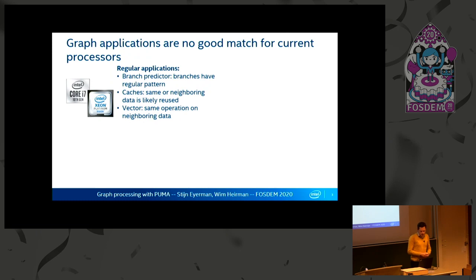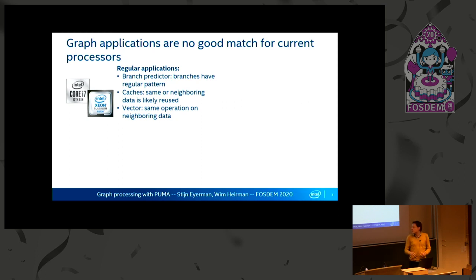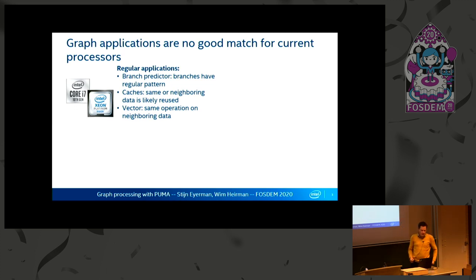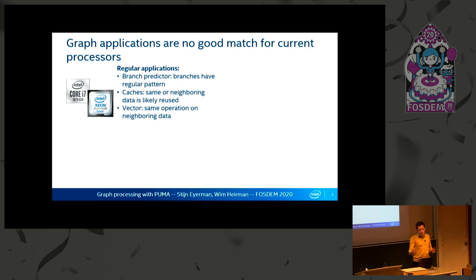Intel is the market leader of high-performance processors. In these processors, we've implemented a lot of things for regular applications that work very well, such as branch prediction. Branches in regular applications are very predictable, so we use that to predict branches ahead to flow instructions more continuously. We have caches that assume if you access some data, you will access it again in the near future or its neighboring data. We have vector operations that perform the same operation on neighboring data, and all that works well for regular applications.